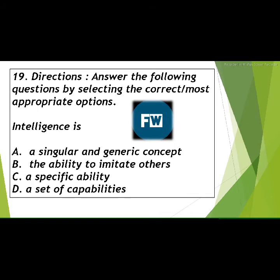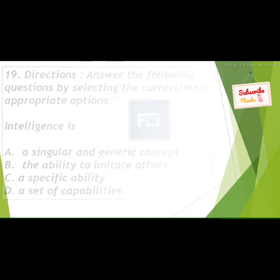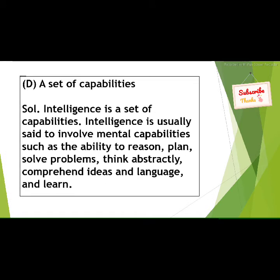Question number 19: Intelligence is — options are: A) a singular and generic concept, B) the ability to imitate others, C) a specific ability, D) a set of capabilities. The answer is option D: a set of capabilities. Intelligence is a set of capabilities.